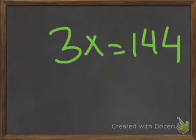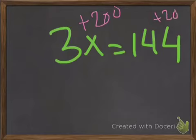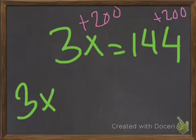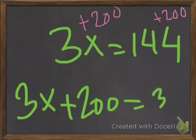I'm going to add 3x plus 200. So I'm going to do the other side by 200, so I'm going to do 144 plus 200. So our new equation will be 3x plus 200 equals 344.